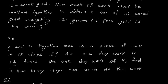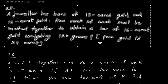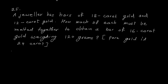Now let us move to question 25. A jeweller has bars of 18-carat gold and 12-carat gold. How much of each must be melted together to obtain a bar of 16-carat gold weighing 120 grams? Pure gold is 24-carat gold. 18-carat gold means that in 24 parts, 18 parts are pure gold and the rest is some other metal.